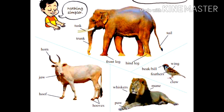Paw (panja), mane, eye, beak, bill (choach), wing (punk), feathers (pisa), pakshanchi, claw (nakhyasnara panja).